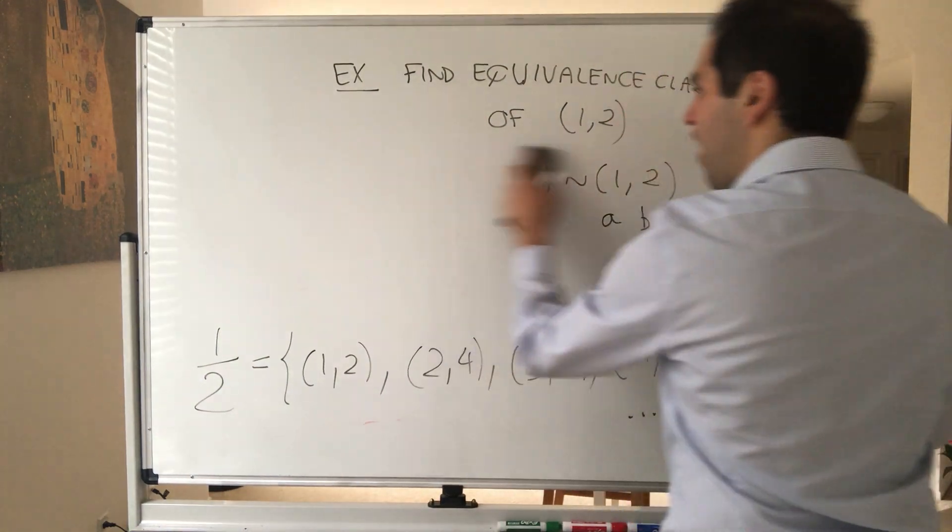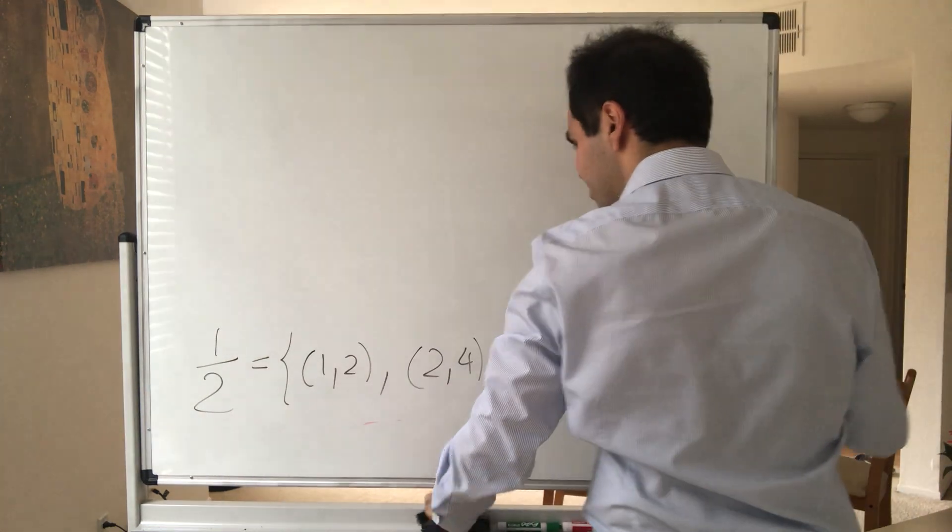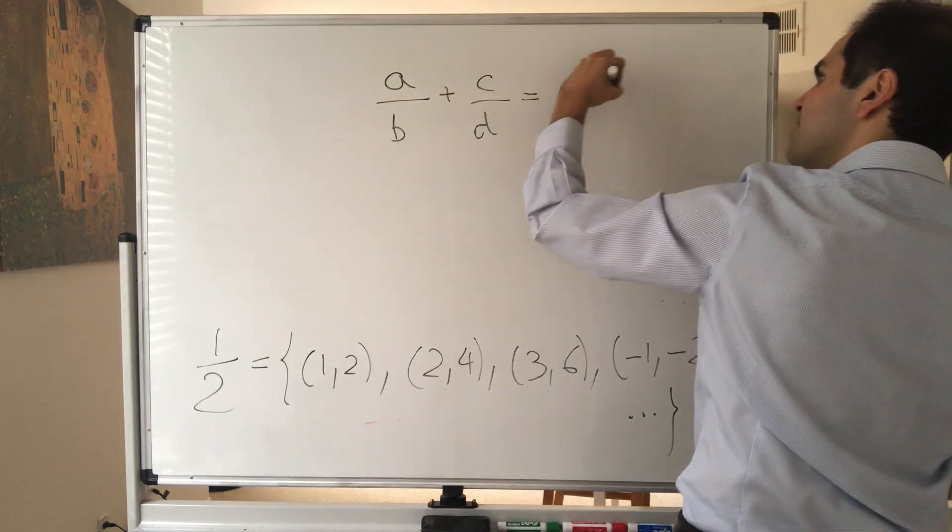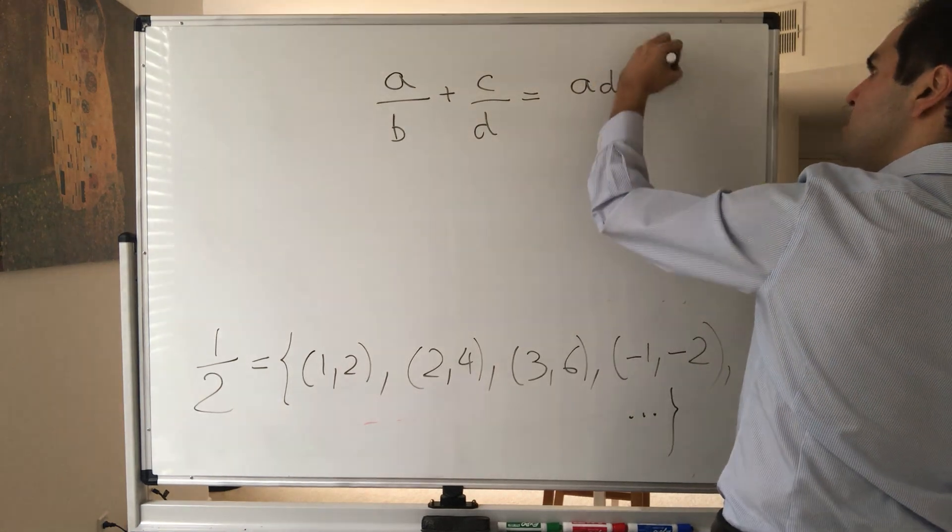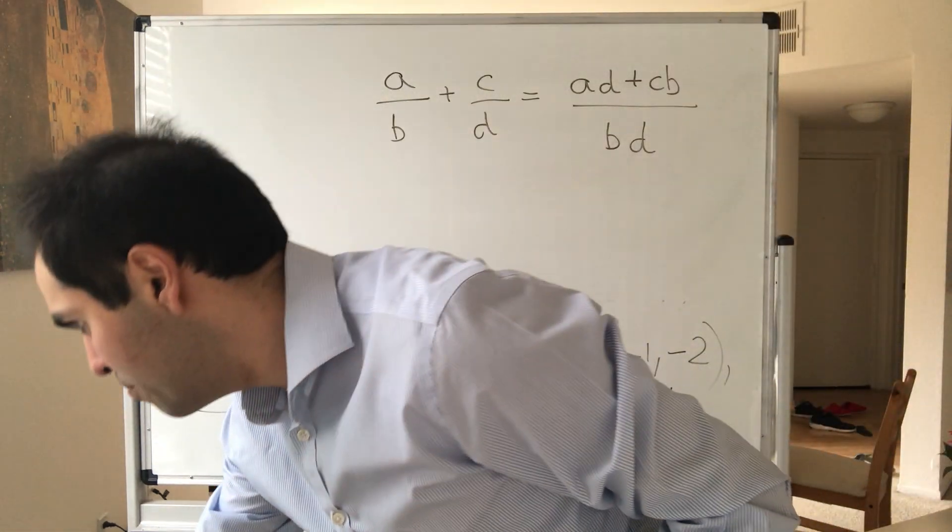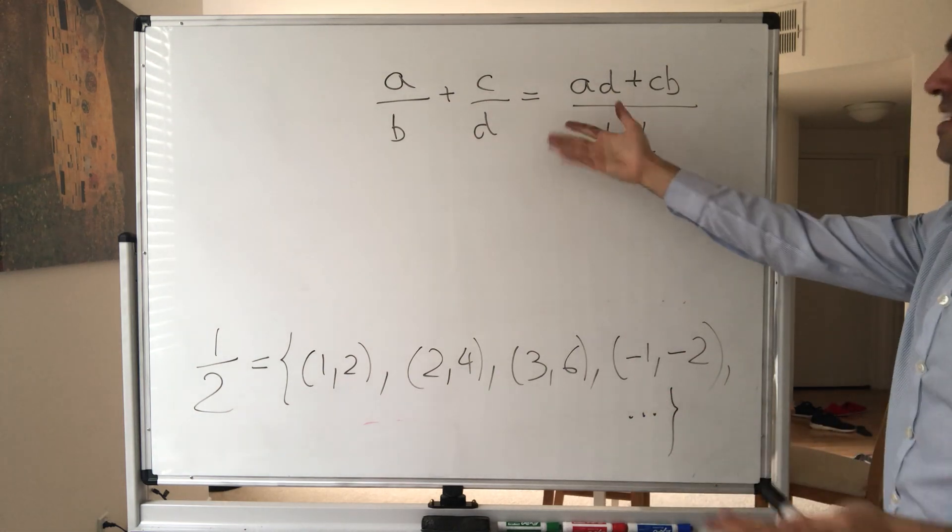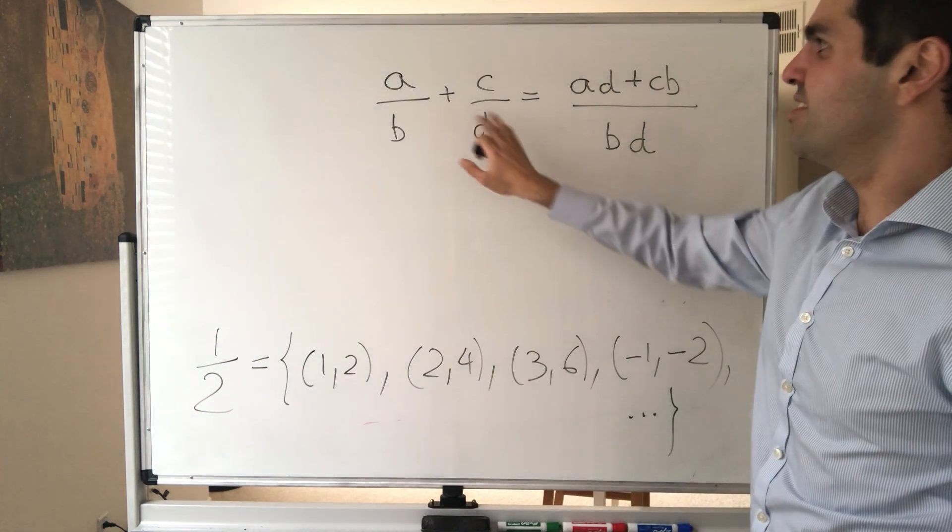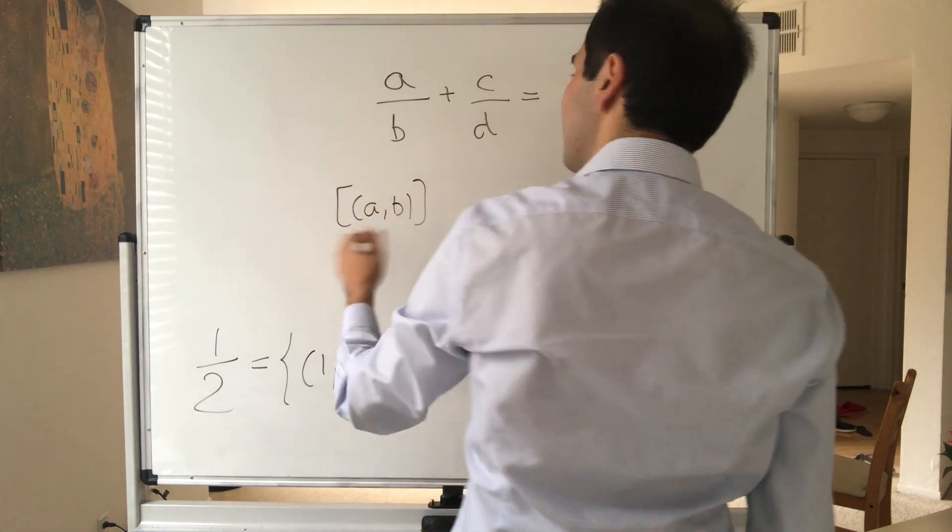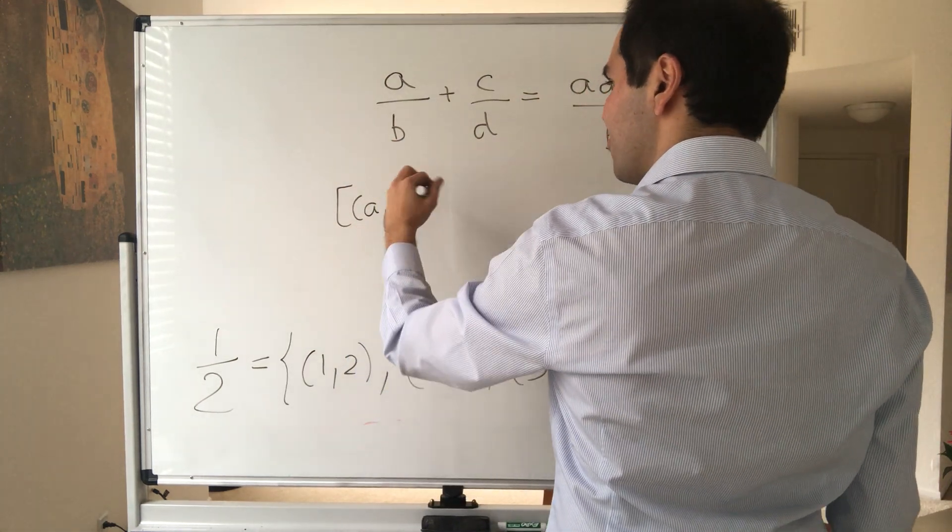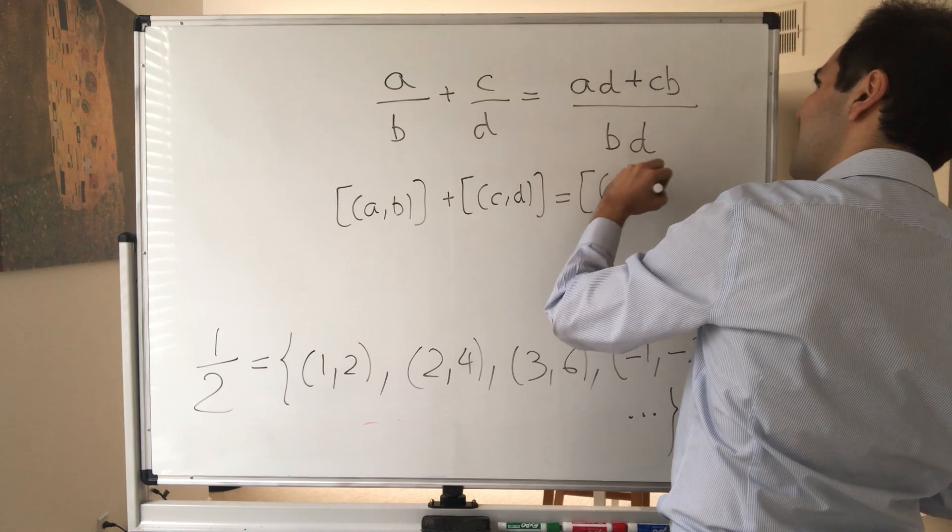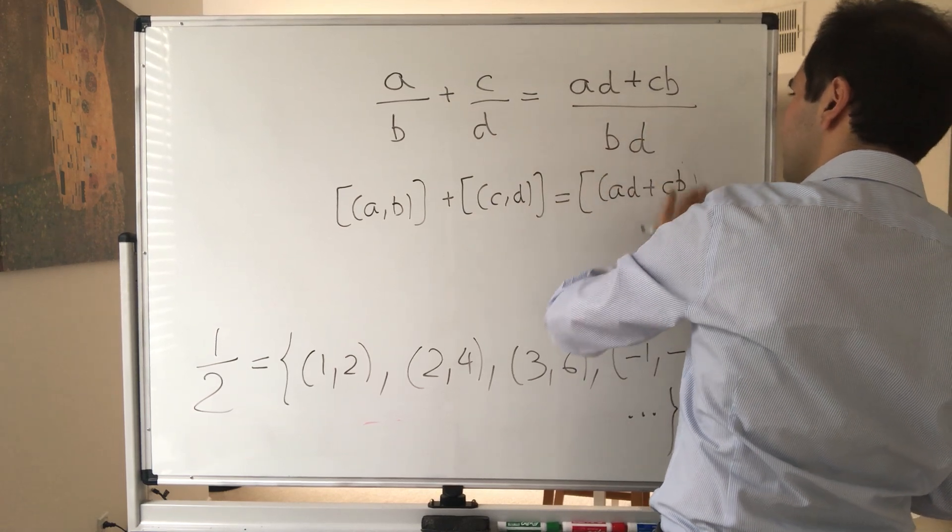And the awesome thing is, by the way, using that we can define the usual fraction operations. For instance, remember a over b plus c over d? That's the same thing as (ad + cb) over bd. And let's see, hopefully I have time. Yes. And so in particular, what does that mean in terms of equivalence classes? What's the sum of two fractions? All that this means is the way you define two fractions: the equivalence class of (a, b) plus the equivalence of (c, d) is defined to be the equivalence class of (ad + cb, bd).